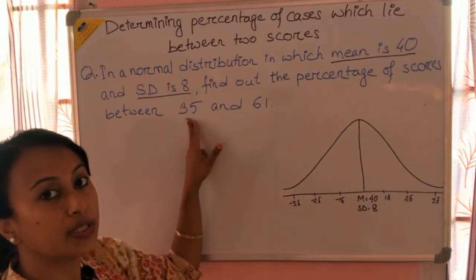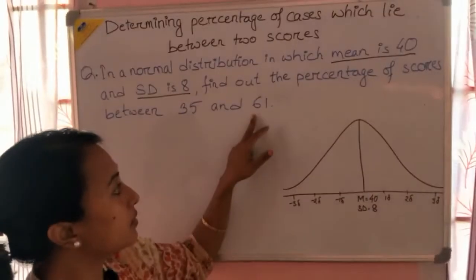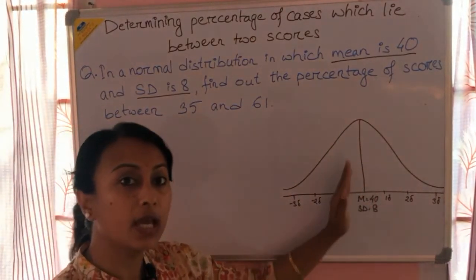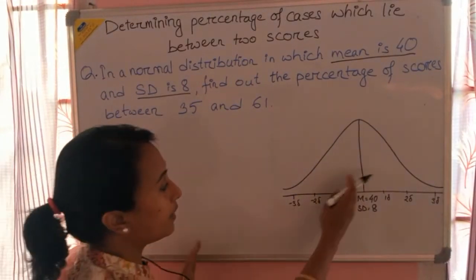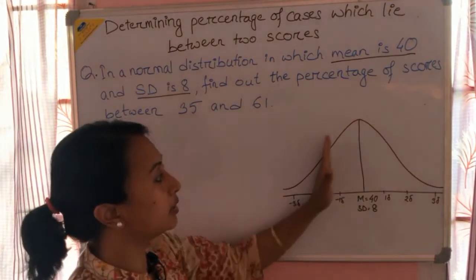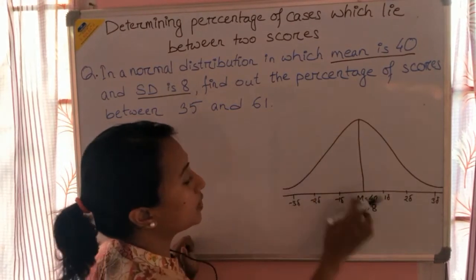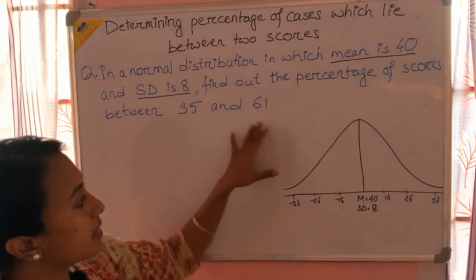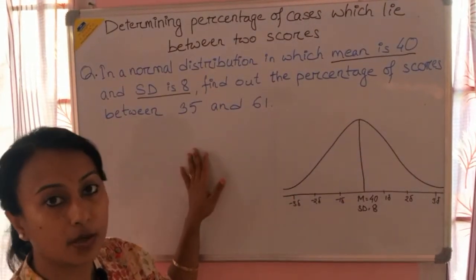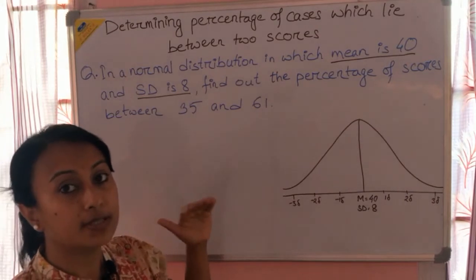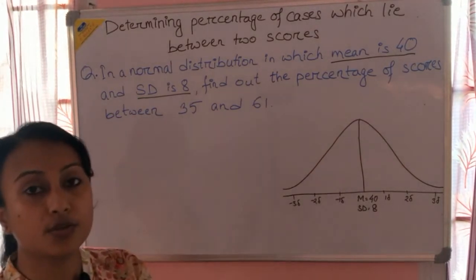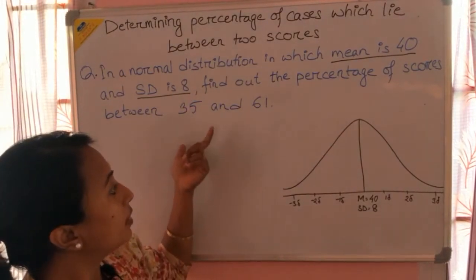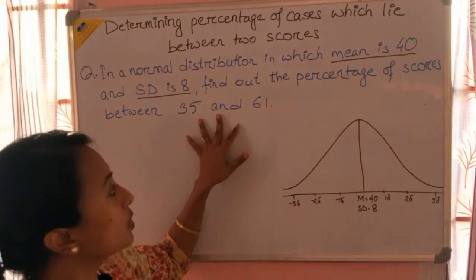What we need to find is the area between 35 and 61. Now, where will 35 and 61 lie in the NPC? Since mean is 40 and 35 is less than 40, 35 will lie on the left side of the mean. Score 61 will lie on the right side because it is greater than 40. To place 35 and 61 in the NPC, we need to first find out the Z-score, and then from the Z-score, find out the area under the curve.